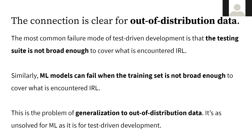This connection makes clear an idea that machine learning has taken a while to internalize: out-of-distribution data. The most common failure mode for test-driven development is that the testing suite is not broad enough to cover what's encountered in real life when we get into production. We tested a whole bunch of things, but didn't test what happened when somebody uses a name that's entirely composed of emojis. Similarly, machine learning models can fail when the training set is not broad enough — we don't have pictures of blue stop signs in our self-driving car dataset, but maybe they're out there in the world. This problem of generalization to out-of-distribution data is as unsolved for machine learning as it is for test-driven development.